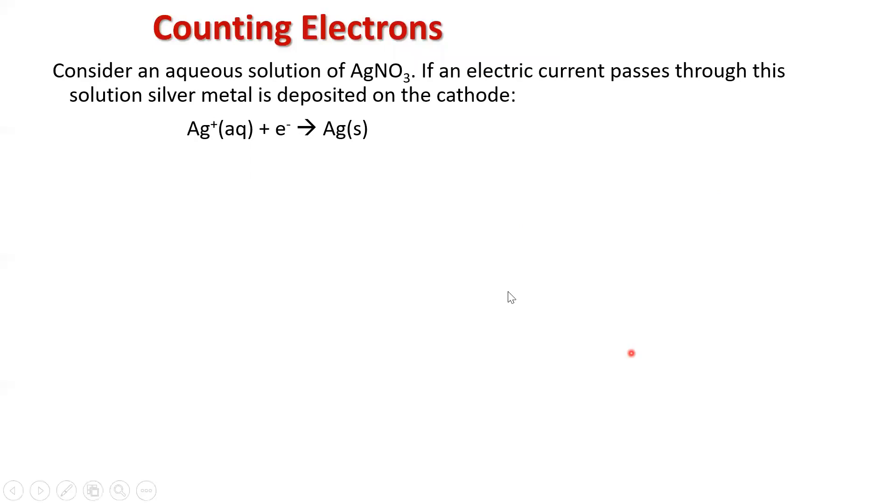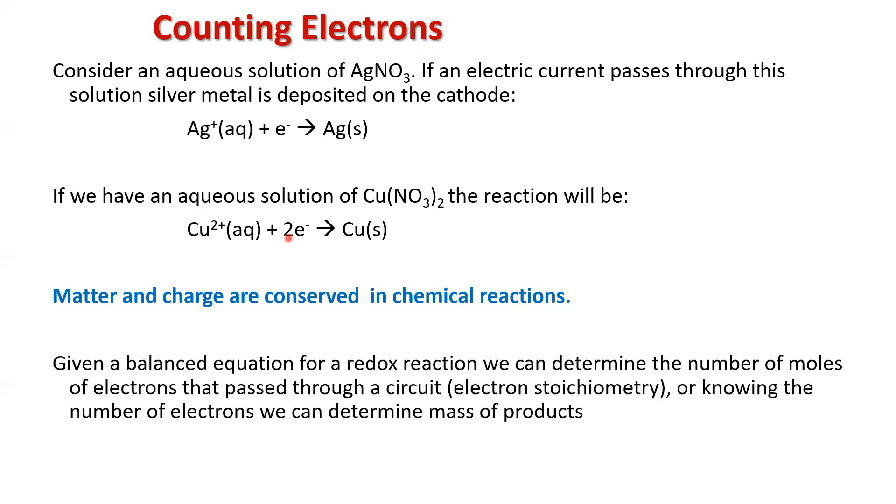Math-wise, if we were to look at silver ions becoming silver atoms, it's a one to one ratio with respect to the silver ions and the electrons. If we were to look at something like copper ions to electrons, the ratio is a one to two ratio. Matter and charge are conserved in chemical reactions. And when we look at these balanced equations, we're going to be able to use the stoichiometry in those balanced equations to figure out how much metal we can plate out in our electroplating process.